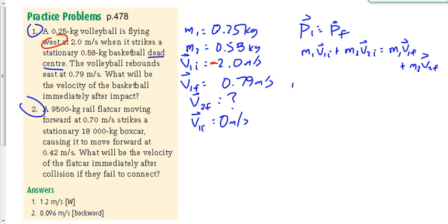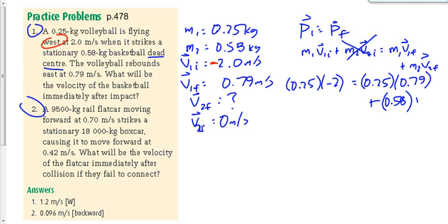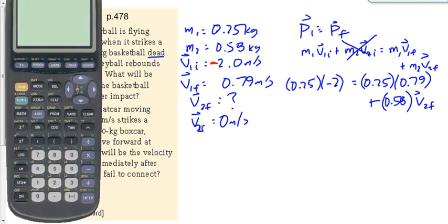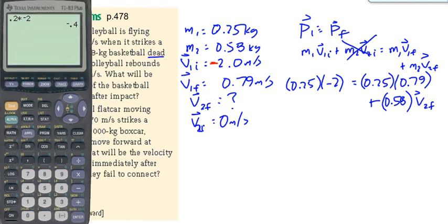Let's plug in some numbers. M1 is 0.25, V1i is negative 2. V2i is 0, so we'll just cross that term off. 0.25 times V1f, 0.79, plus 0.58 times V2f. Let's pull out the calculator and plug in some numbers together. 0.25 times negative 2 gives me negative 0.5 on the left-hand side. Let's subtract from that 0.25 times 0.79. Why do we subtract that? On the right-hand side it's a positive value, so we have to take it to the left-hand side by making it a negative value, by subtracting it.